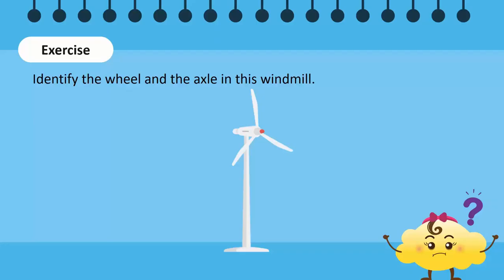Can you identify the wheel and axle in this windmill? The blades of the windmill act as a wheel while the shaft attached to the blades is the axle. The blades are far longer compared to the diameter of the shaft so a small force from the wind can easily rotate the shaft by rotating the blades.